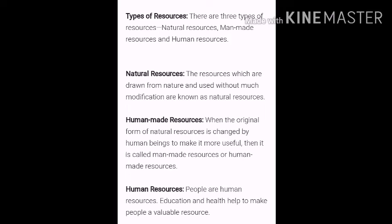You might have heard about resources in your previous classes. Let's describe these kinds of resources in detail. There are three kinds of resources: natural, human-made, and human. Natural resources are the resources which are found in nature — the resources that we get from nature are known as natural resources, like minerals, diamonds, etc.